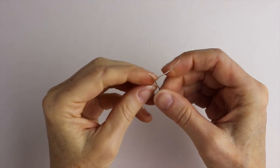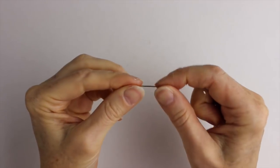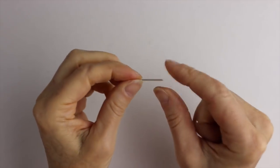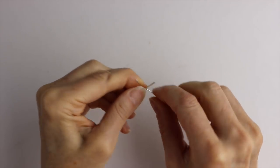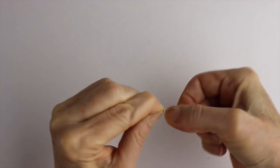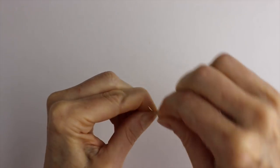Now to make the crimps that go on the end of the necklace, rather than the straight pin, use a 20 gauge piece of wire because it's a little thicker. We're going to do it in the same way, just wind it around three times.